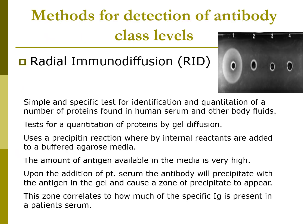One method to determine serum levels of an antibody class is radial immunodiffusion, or RID. This is a quantitative precipitation method. We can use RID to quantitate a number of different proteins like immunoglobulins, CRP, alpha-1-antitrypsin, transferrin, and complement, as well as the antibody classes. It is a simple and specific test for the identification and quantitation of proteins found in human serum and other body fluids.